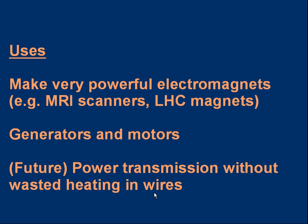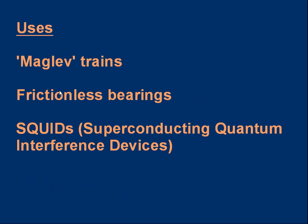Of course, you have to keep the superconductors cold enough, below the transition temperature. Other uses include magnetic levitation trains — maglev trains — where the Meissner effect can be used to support a train, removing all the resistance of wheels so trains can go very fast. You can also make frictionless bearings where magnetic levitation means there's no contact friction. SQUIDs — superconducting quantum interference devices — are very sensitive devices that measure very tiny magnetic fields; they can even measure the magnetic field produced by currents in nerve cells in the brain. These are just a few of the uses of superconductors.